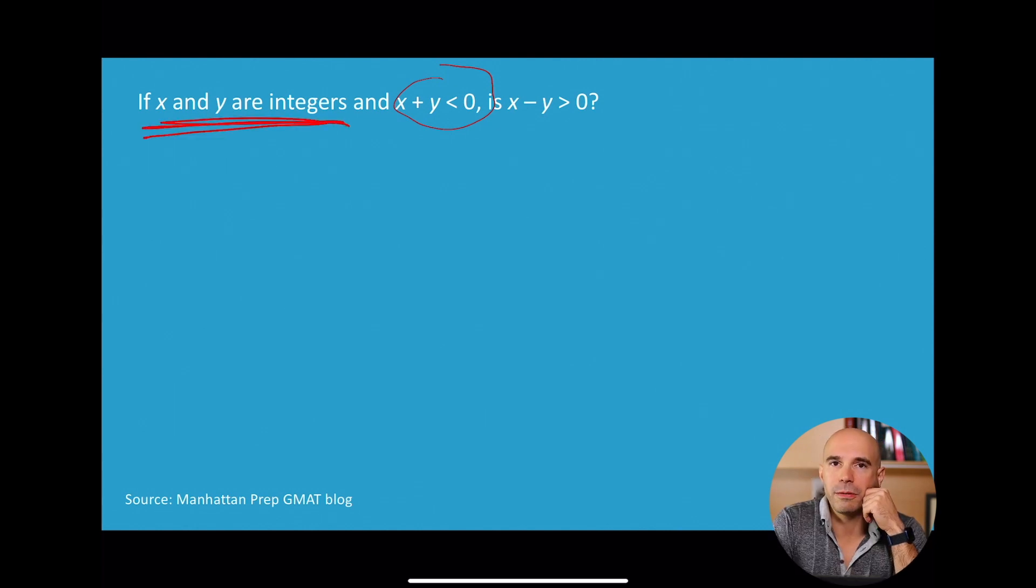They're both integers. Now if you like to take notes in the middle of the test, like you're reading a question and you want to note down some stuff, what I would write down there is that X is dot dot dot negative 3, negative 2, negative 1, 0, 1, 2, 3 dot dot dot, just to really kind of digest the fact that it has to be an integer. And the same of course goes for Y.